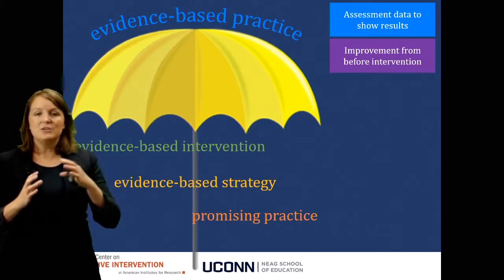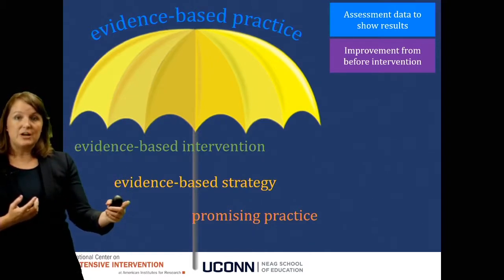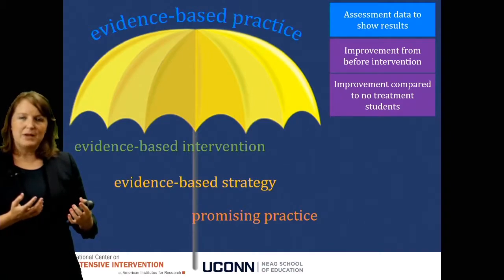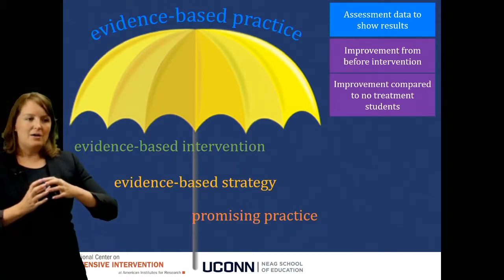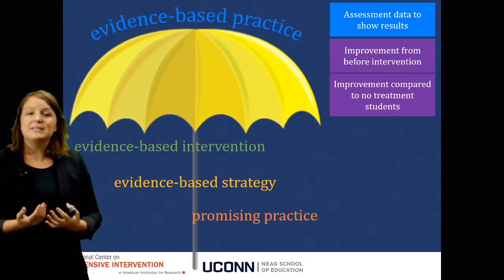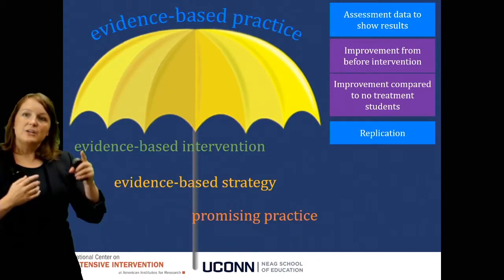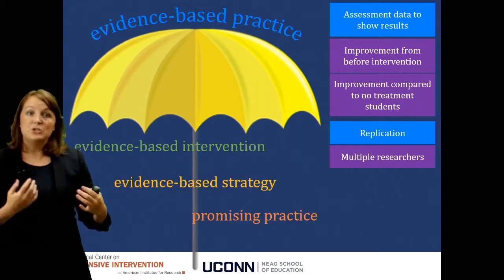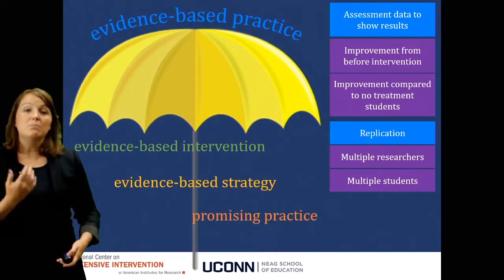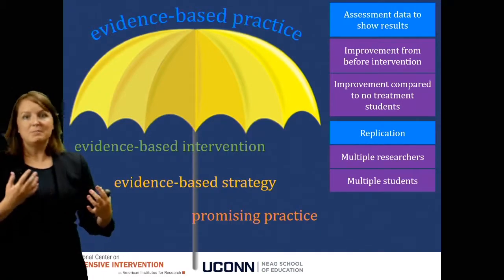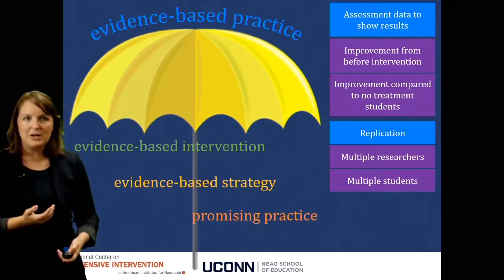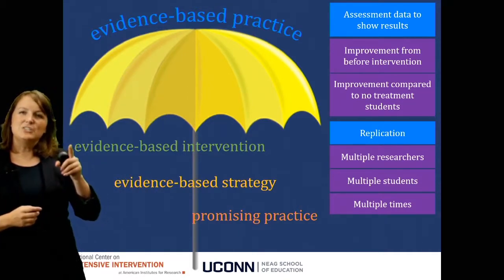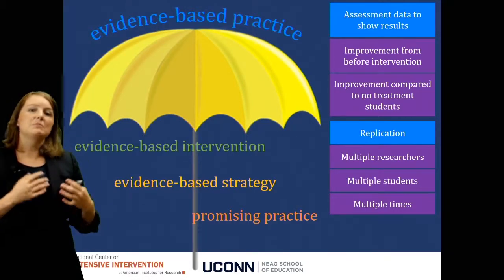You might also see improvement compared to students that did not receive any treatment. Perhaps there's an intervention going on, and we see much higher scores for students that did the intervention versus students that did not. I also want to look at whether the intervention or strategy has been replicated. Replication can occur because the intervention has been used by multiple researchers, tested with multiple students — perhaps students in Massachusetts and Ohio, and even better, also in California — done multiple times across multiple years or at different locations, and it still has shown the same positive results.